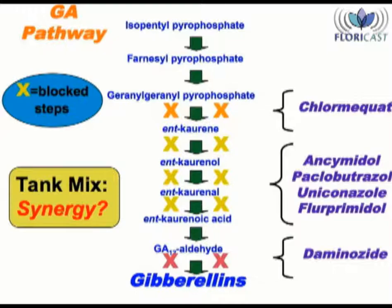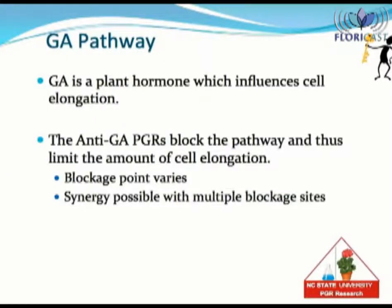This is the reason why tank mixing with some chemicals, like Cyclocel and B9, can give a synergistic effect on poinsettias. The double action of blocking the pathway provides a 3x degree of control. So now you know how anti-GA PGRs work: they control the production of the plant hormone GA, which influences cell elongation. Each of the three groups of PGRs works at a different point in the GA biosynthesis pathway. Therefore, you have the possibility of tank mixing some of the PGRs to obtain a synergistic effect.